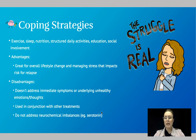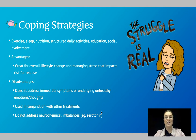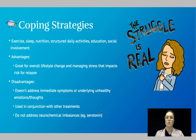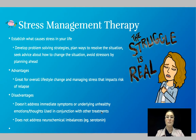Coping strategies include things like exercise, sleep, nutrition, daily activities, education, and social involvement. These are all great for leading a healthy life and protecting against mental illness or relapse. However, the disadvantages are that they're not going to be enough to address immediate symptoms, they won't address underlying thoughts, emotions, and beliefs, and they won't address neurochemical imbalances. So for someone with a debilitating disorder, these strategies alone aren't going to be enough.